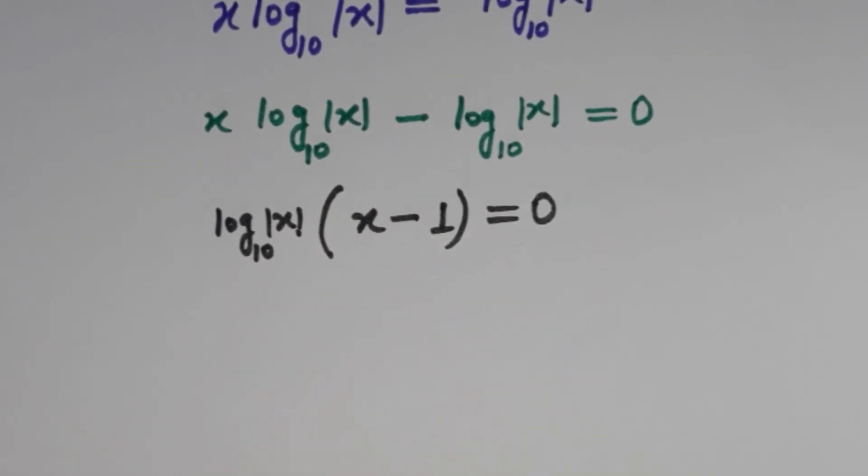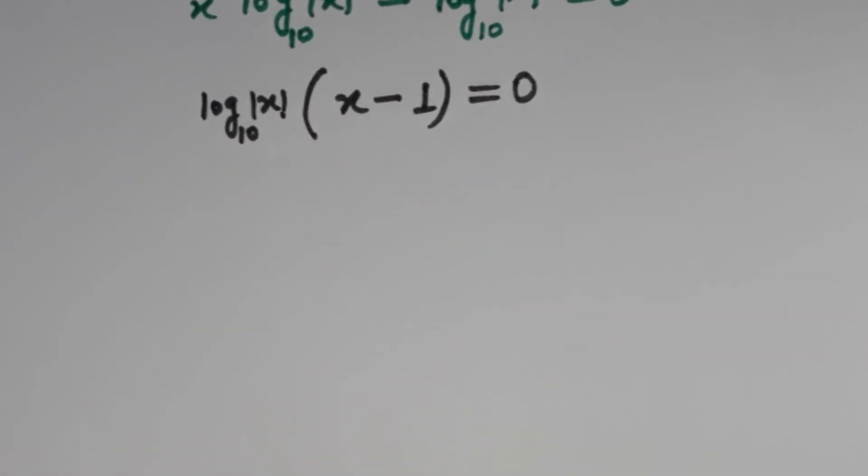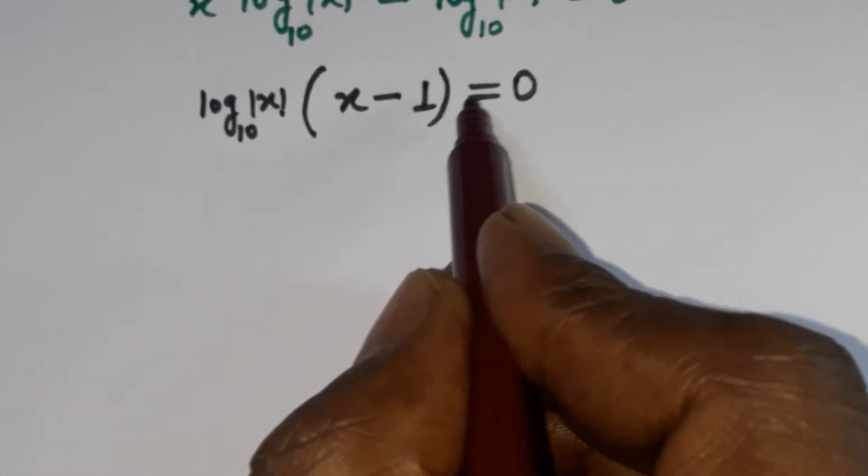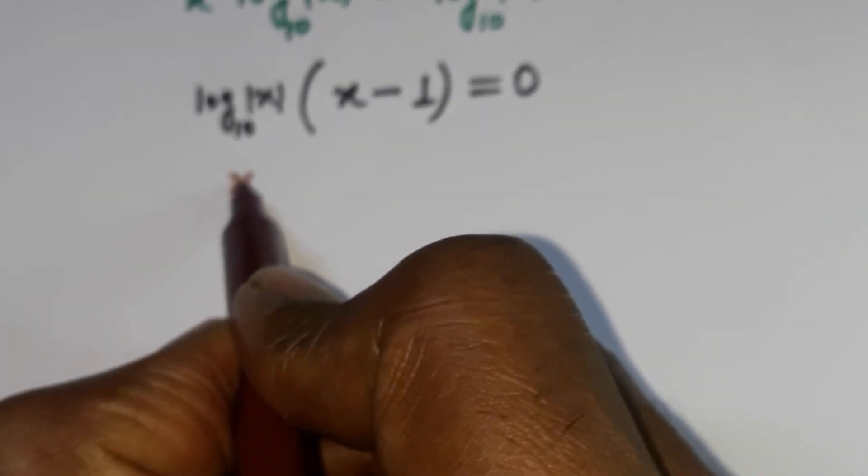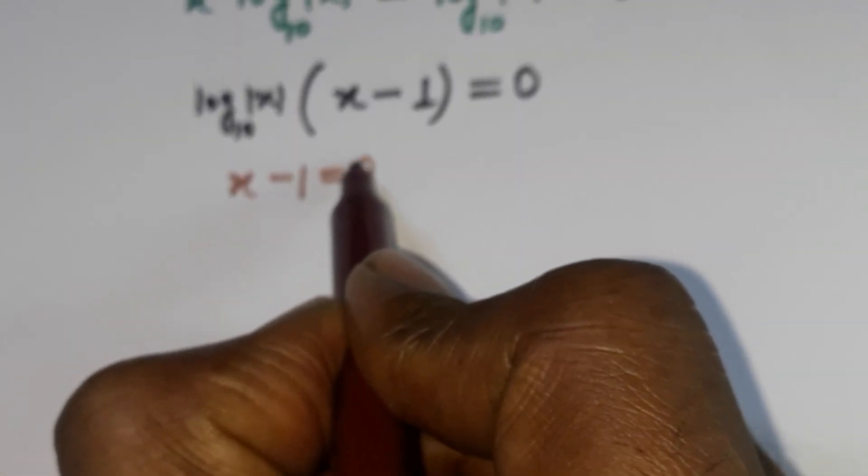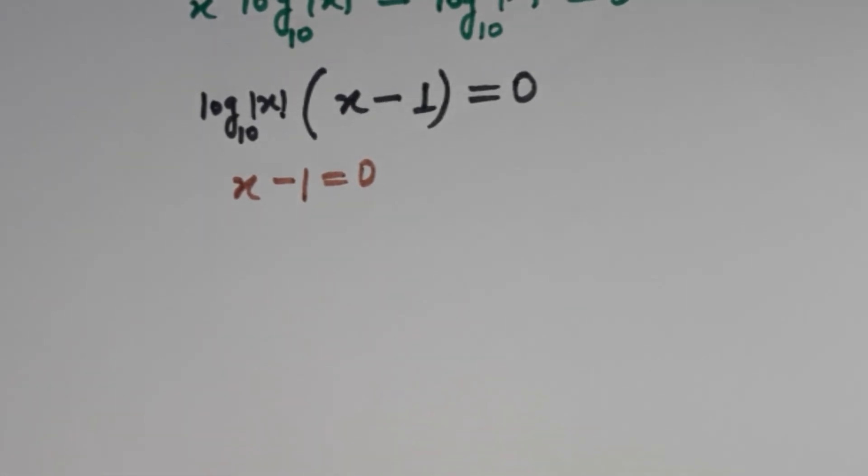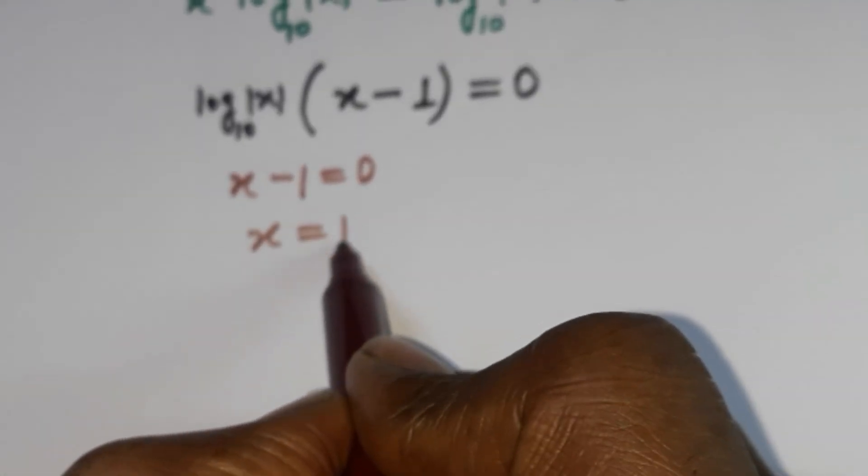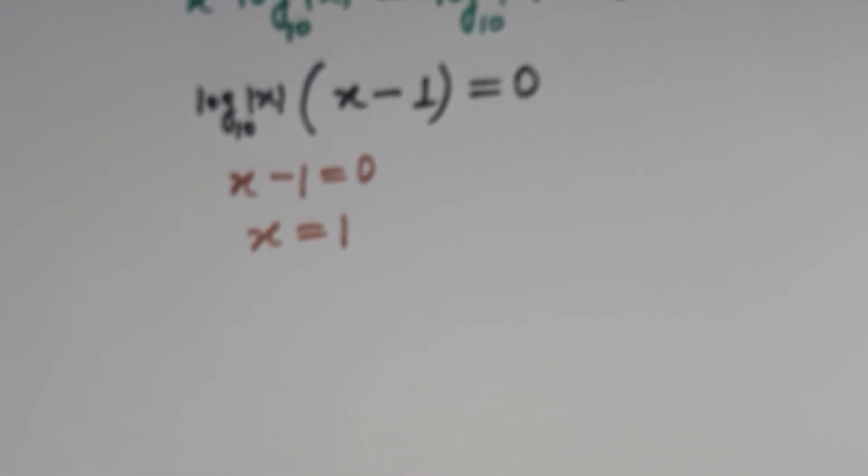Next we have either this will be equal to 0 or either this will be equal to 0. So I am making x minus 1 equal to 0, so it is coming x equal to 1.